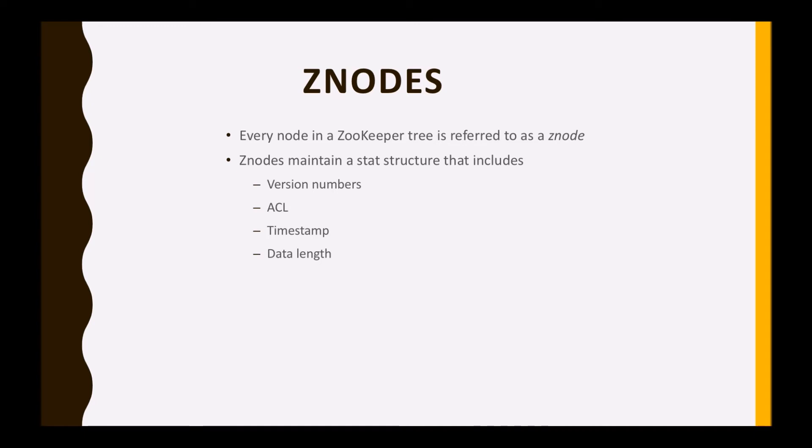The last one is data length. The total amount of data stored in a Z node is the data length. You can store a maximum of 1 MB of data in each Z node.